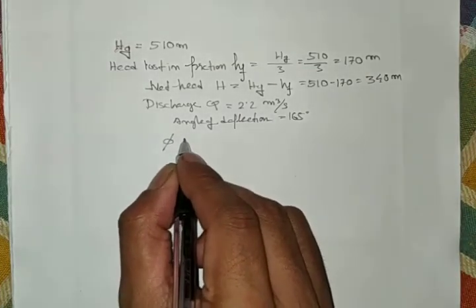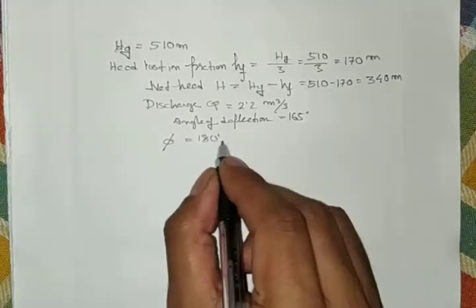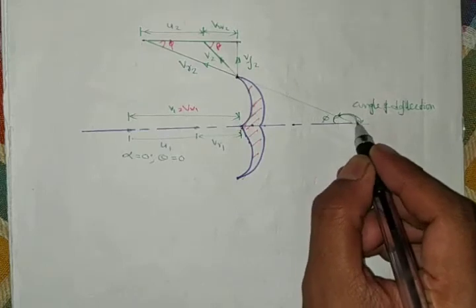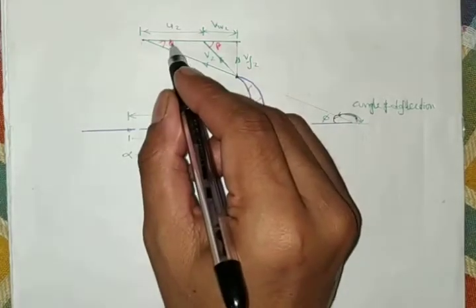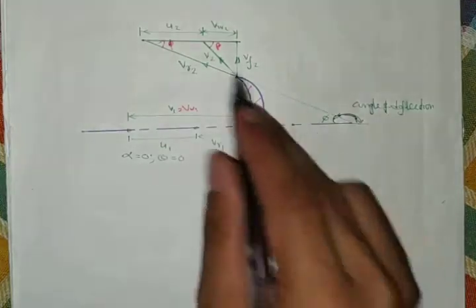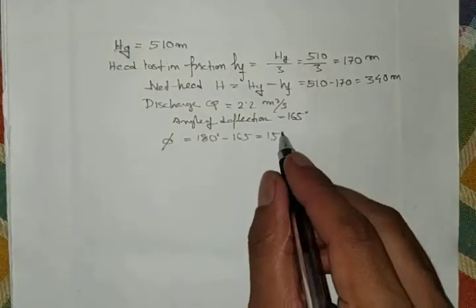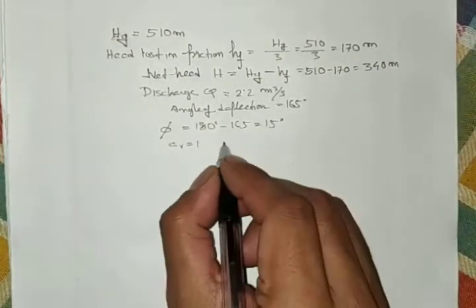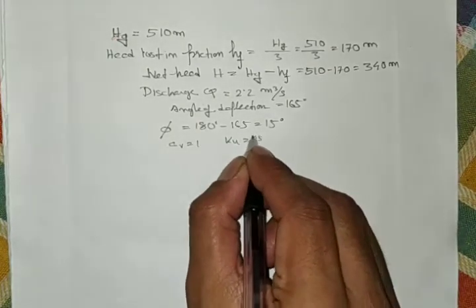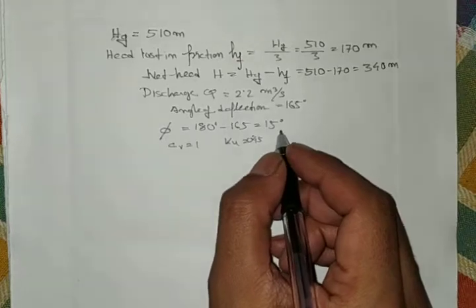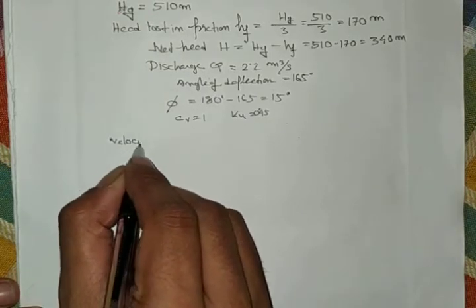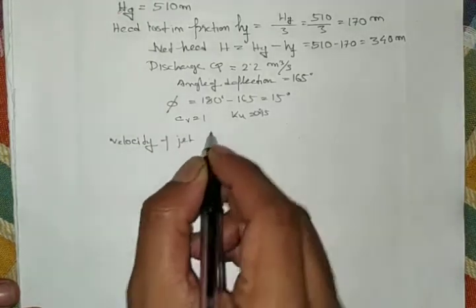The blade angle phi can be found as: phi = 180 − 165 = 15°. In the velocity diagram, this angle phi appears at both inlet and outlet of the bucket.